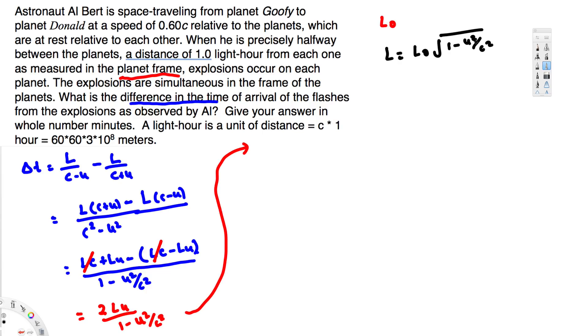This is the Lorentz length contraction equation. Instead of L, we can replace this equation to solve this one. From this, we can say that ΔT = 2 times, instead of L, I'm plugging this one, so this is going to be L₀√(1 - U²/C²) times U.